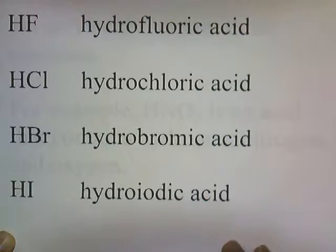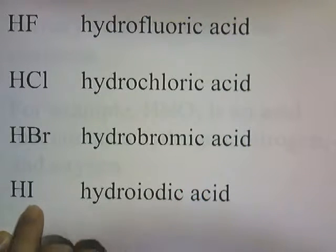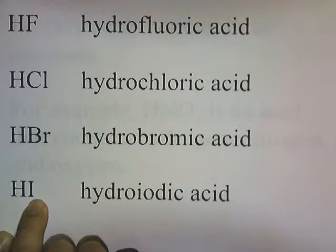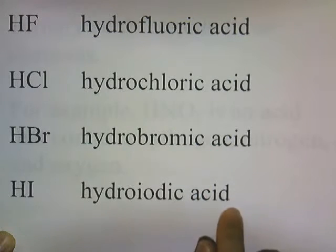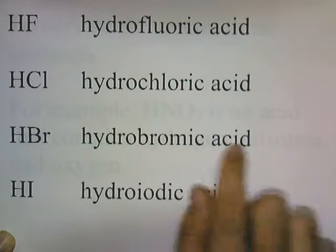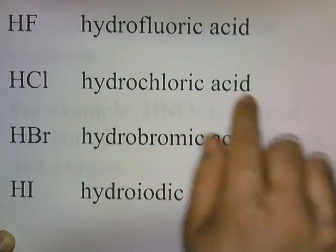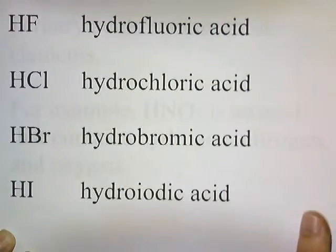So all binary acids start with the word hydro, then part of the name of the second element, then '-ic', acid. Hydroiodic acid, hydrobromic acid, hydrochloric acid, hydrofluoric acid.